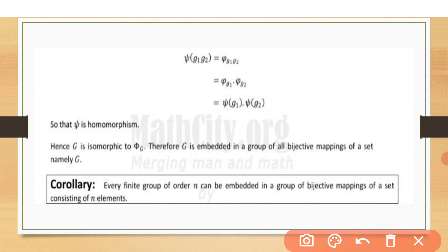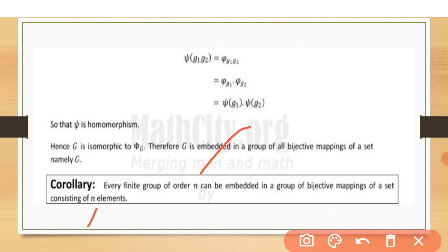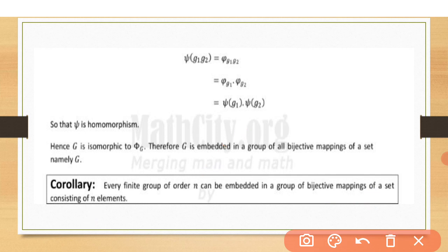Here is a corollary from Cayley's theorem: every finite group of order n can be embedded in a group of bijective mappings of a set consisting of n elements. Since the number of elements is the same, one-to-one and onto mappings can be easily constructed, so the group can be embedded easily. Thank you so much.